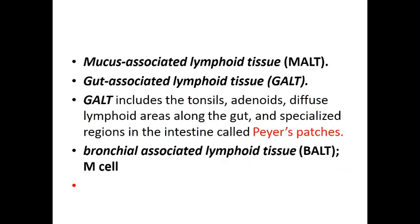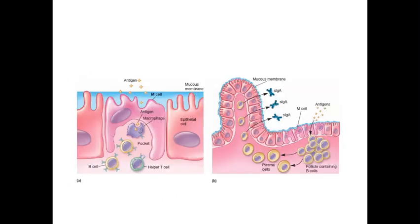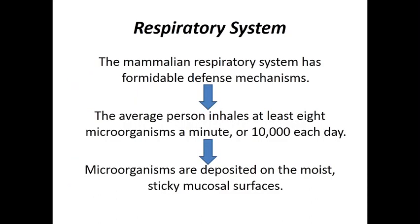There are also mucous-associated lymphoid tissues: MALT — mucous-associated lymphoid tissue; GALT — gut-associated lymphoid tissue; and BALT — bronchial-associated lymphoid tissue. These are present in the mucous membranes of different organs, and they can produce certain chemicals to eliminate microorganisms. Now let's focus system by system.